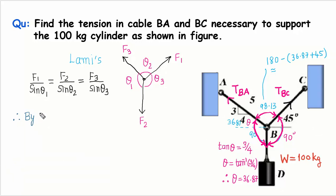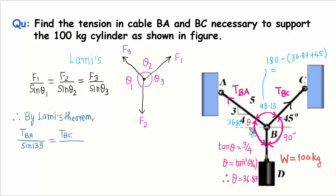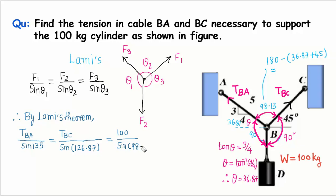Therefore, by Lamy's theorem: tension BA divided by sine of the angle opposite to it — that is 45 plus 90, which is 135 — equals tension BC divided by sine of its opposite angle, which is 90 plus 36.87, that is 126.87. This also equals weight divided by the angle opposite to it, which is 98.13 — so sine 98.13. So the weight is 100 kg divided by sine 98.13.